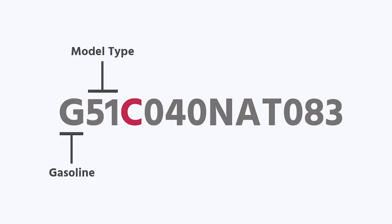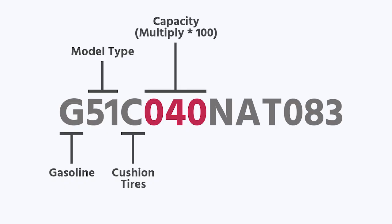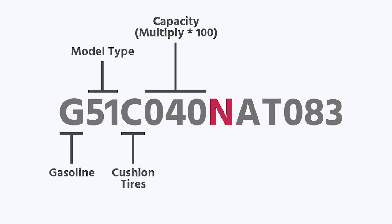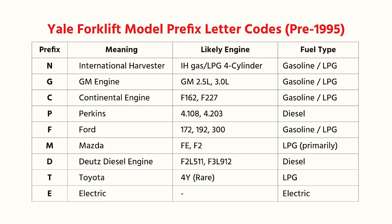Then you've got C — C is going to be a cushion tire. The 0-4-0 is the same as before: it's just multiplied by a hundred, telling you that this particular model number is a 4,000-pound lift capacity. The N in the model number is your engine type — in this case, N is an International Harvester engine.